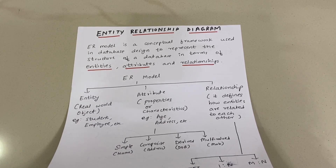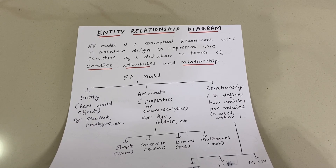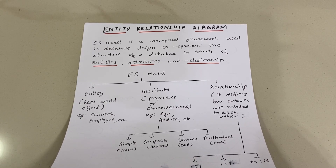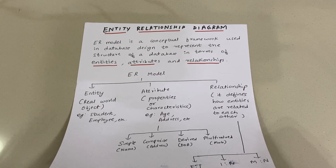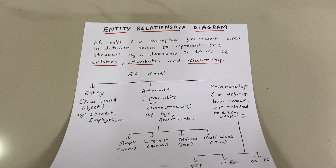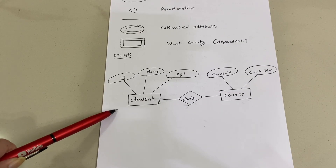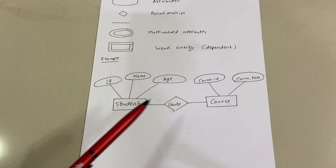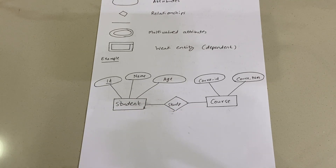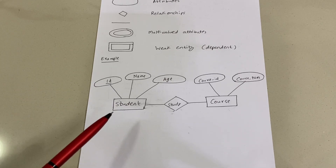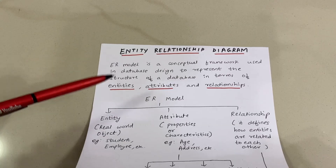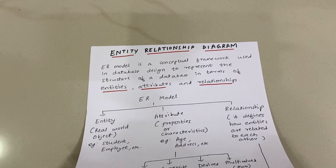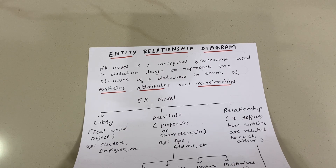Welcome back to another video on Crack Concepts. Today we will be discussing the Entity Relationship diagram, or ER diagram. The ER model is a framework used in database design to represent the structure of a database. It shows what tables we have and how they are related to each other.